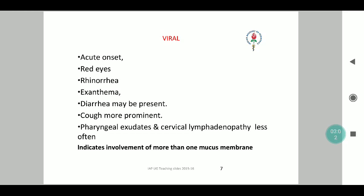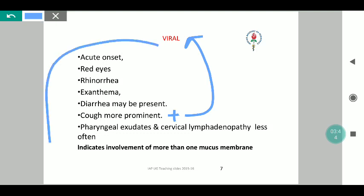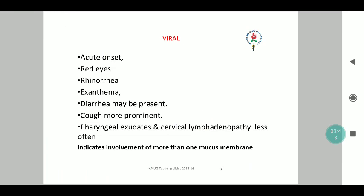For the viral component, they will almost always have an acute onset with red eyes. Rhinorrhea — nasal drip — will be present. Exanthematous lesions will be present. Diarrhea will almost always be there; its presence always points in favor of viral. The presence of cough is important; a dry cough will go towards a viral etiology. Pharyngeal exudates and lymphadenopathy will be rare, but viral etiology will sometimes involve more than one mucous membrane.